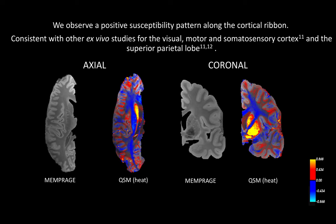Here we show the first echo magnitude of the 500 micron MRI data alongside the QSM results displayed as a heat map. We observe consistent patterns of positive susceptibility along the cortical ribbon suggesting potential iron concentration. This finding is consistent with earlier ex vivo studies on blocked samples validating the presence of iron at grey-white boundaries in the areas we cite here.